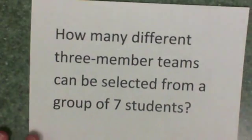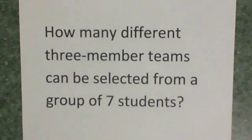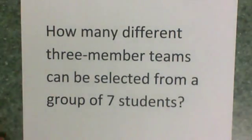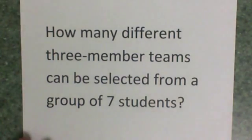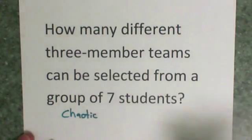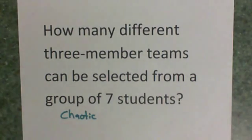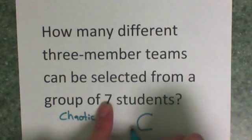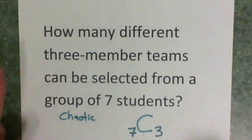So here are a couple questions to practice on. How many different three member teams can be selected from a group of seven students? Now the team just has three members and it doesn't matter who the first member is or second or third. So this is a bit chaotic and once I set the three they can move each other around and so on. So this is a combination.